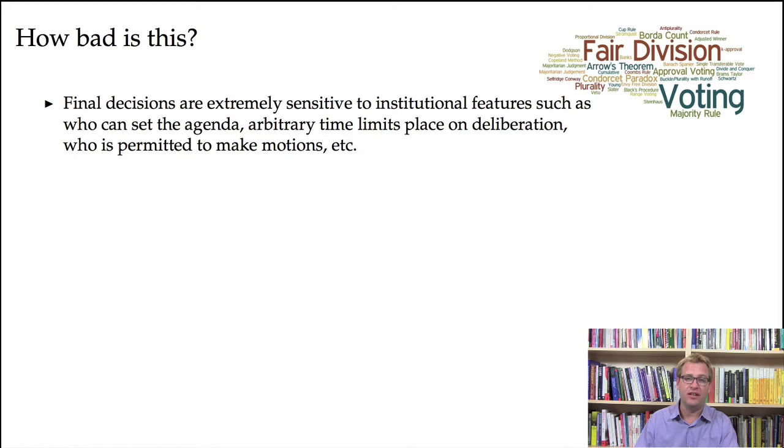So what do we do? The general question is, how bad is this? Should we give up on group decision making? Should we say, I don't know, okay, now we have to just flip a coin? Well, let's think about this question, how bad it really is. So first of all, it does suggest that the final decisions that people make in a group decision making situation are going to be extremely sensitive to institutional features such as who is arbitrarily setting the agenda, arbitrary time limits placed on how long you're deliberating about the different issues, who is permitted to make motions, and so on.